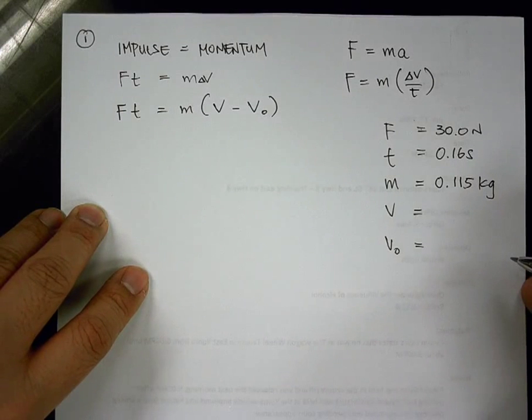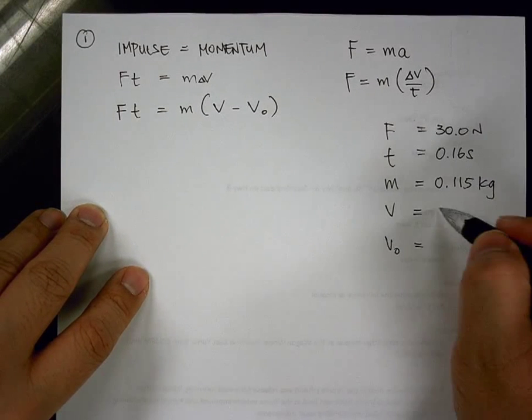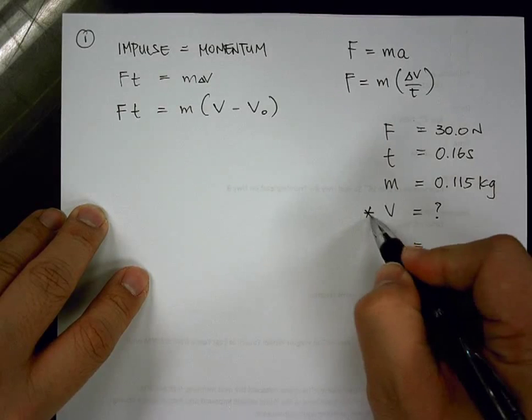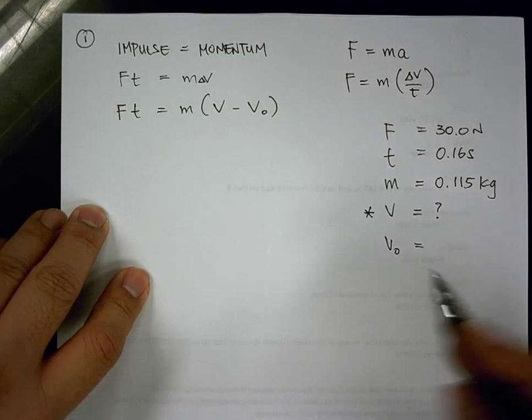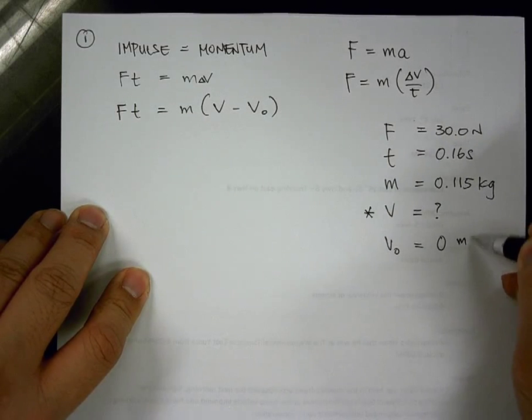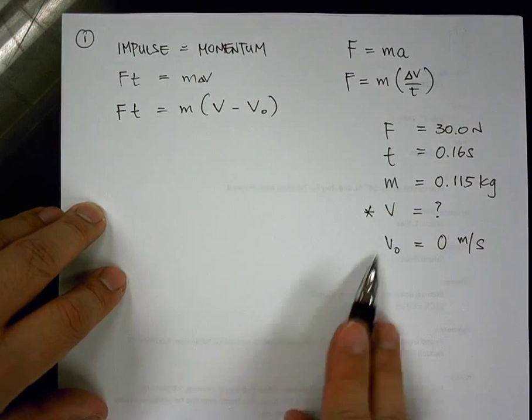And then, the final velocity. We don't know that. That's what we're asked to find. So I'll put an asterisk next to that. How about the initial velocity? Zero. And how do you know it's zero? It's at rest. So we have our variables listed out.